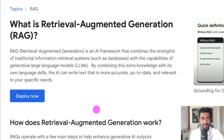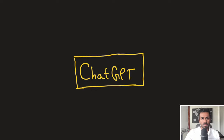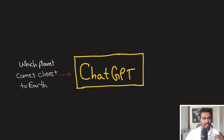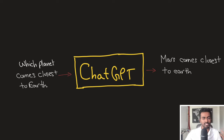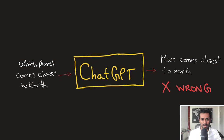To illustrate this, let's take an example. With a large language model like ChatGPT and without RAG, the input might be something like: which planet comes closest to the Earth? The model uses this as a prompt to generate an output — in this case, 'Mars comes closest to the Earth.' This is incorrect; Mars is not the closest planet to Earth, it's Venus. This is a good example of a large language model hallucinating.